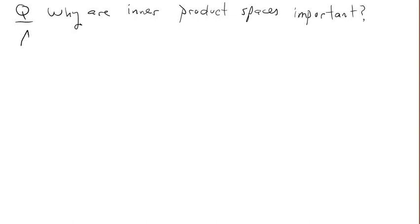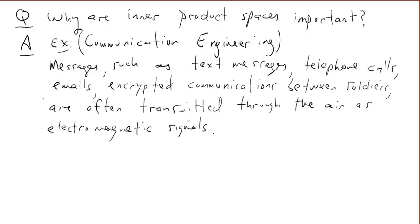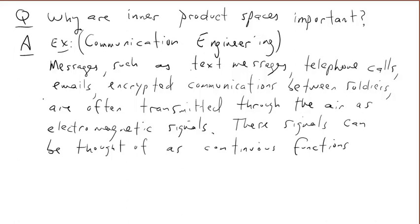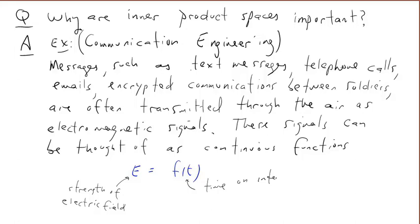What's the significance of inner product spaces — why are they important? Here's an example from communication engineering. Messages such as text messages, telephone calls, emails, and encrypted military communications are often transmitted through the air as electromagnetic signals. These signals can be thought of as continuous functions of time, where e is the strength of the electromagnetic field and t is time, usually confined to a short interval [a, b].